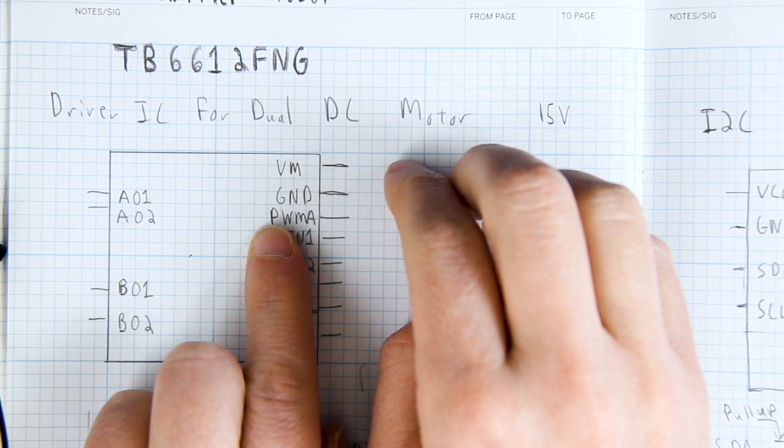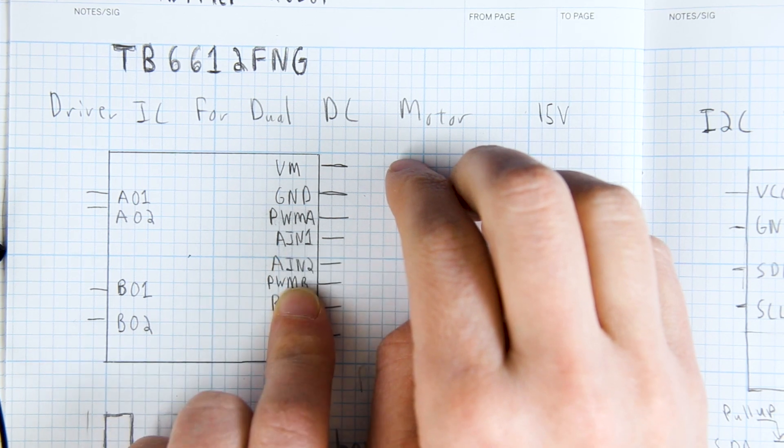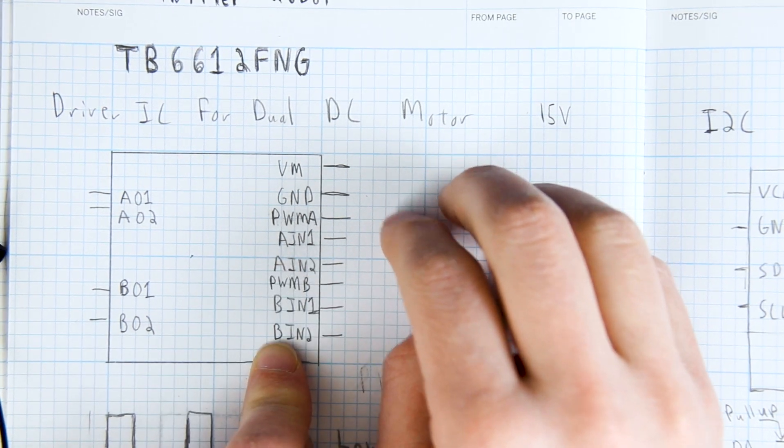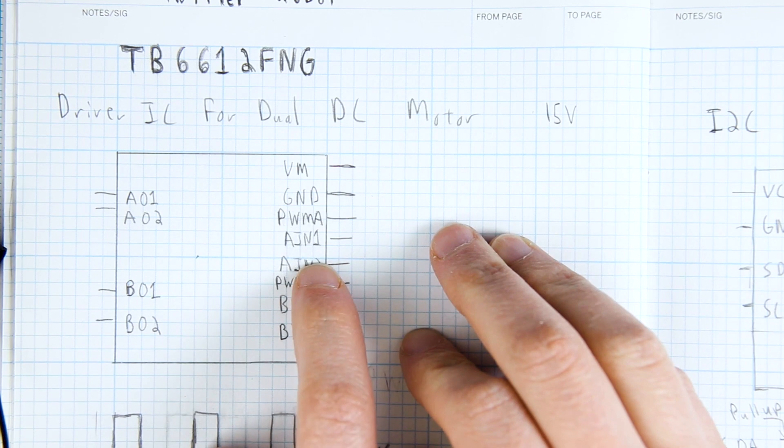We have the voltage in for our motor, we have the ground, and then each of these has three different things we can change: either a PWM, an input 1, or an input 2. And this is for the second motor down here. So let's see what these three inputs do.